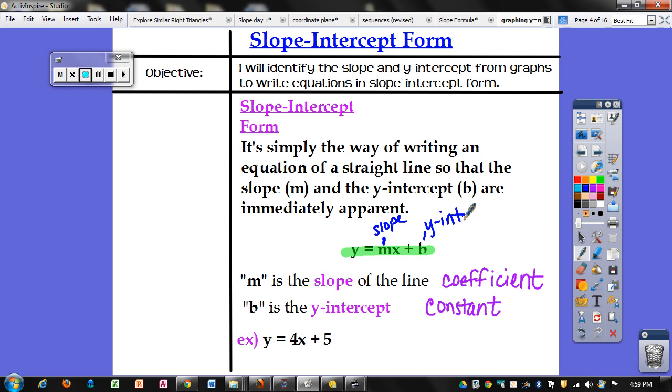And then b is your y-intercept. So for example, for this equation right here, this is going to be your slope, m. And this right here is your y-intercept, b. If you think about it, the slope is your coefficient. It's the coefficient of x here, and then your b, or your y-intercept, is the same thing as your constant.